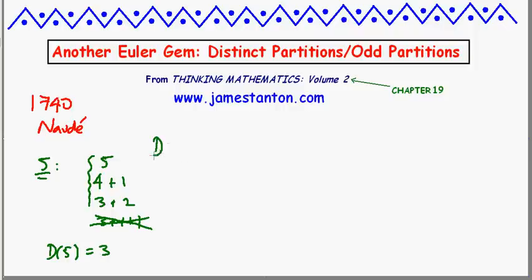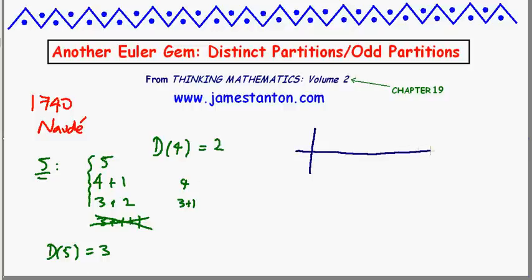If you play with it a little bit, you can find there are two distinct ways to write 4: just 4 itself, or 3 plus 1. And from there we can make a little table of values and just play with these distinct partitions.